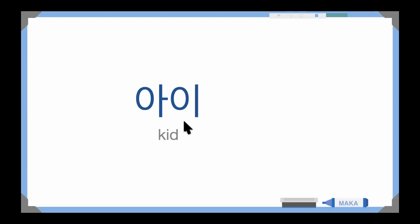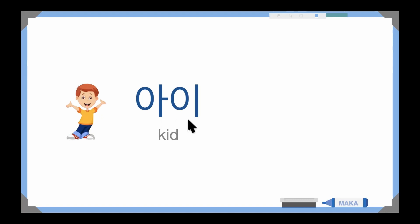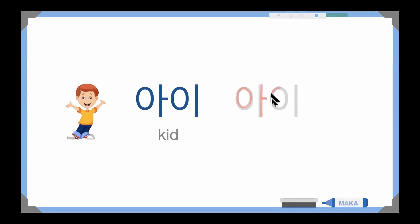And the next one is 'ai', 'ai' — and it means 'a kid' or 'a child'. Let's read: 'ai', 'ai'. Please be careful — this word is made up of two syllables, not 'ai' but 'a-i', 'a-i'. Please be careful. Now I will show you how to write 'ai': make a circle, then 'ah', then 'e' — this is 'i', 'i'. Okay, very good.